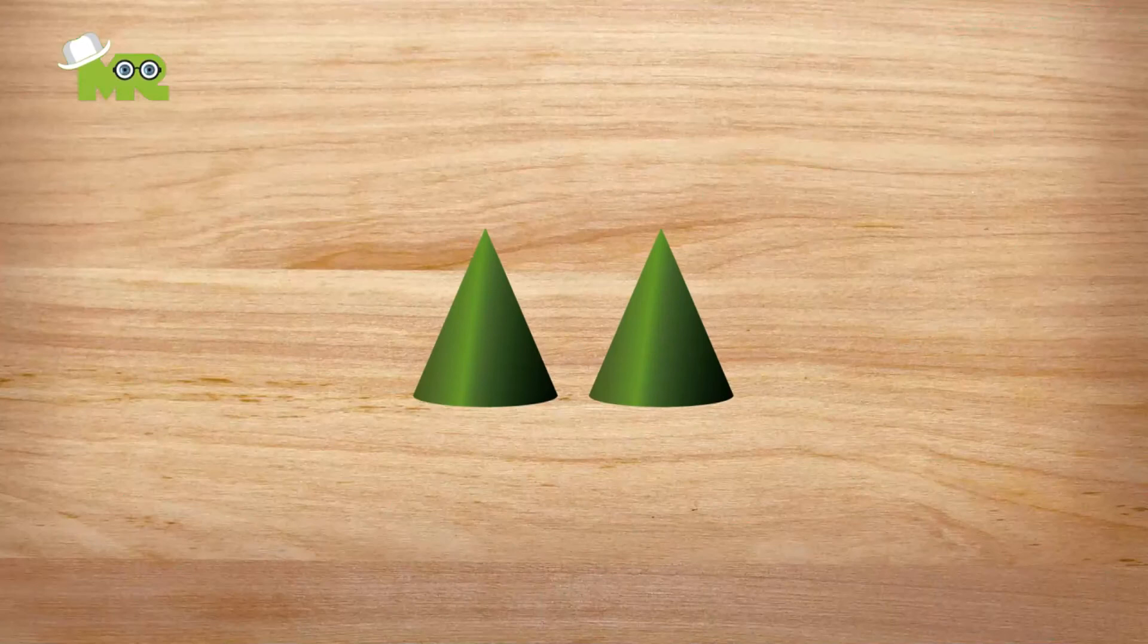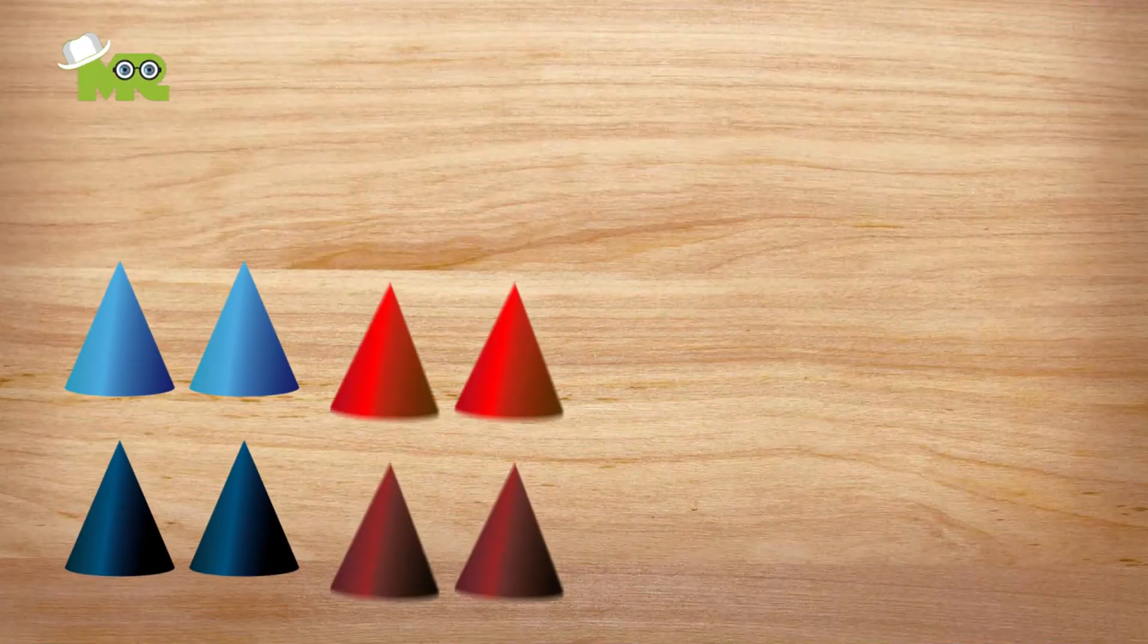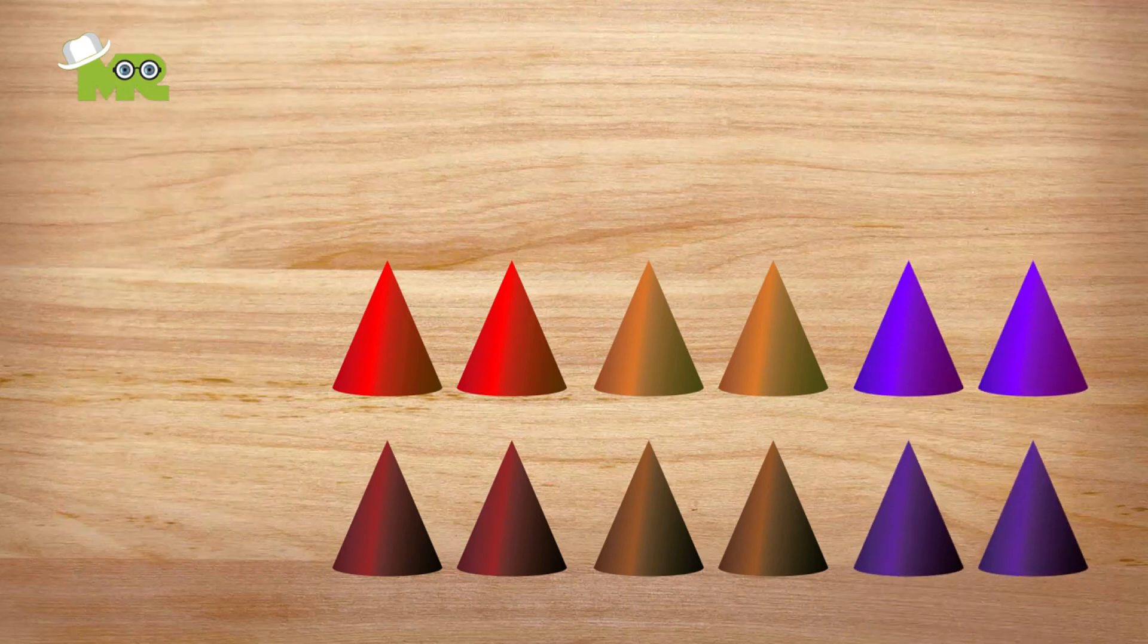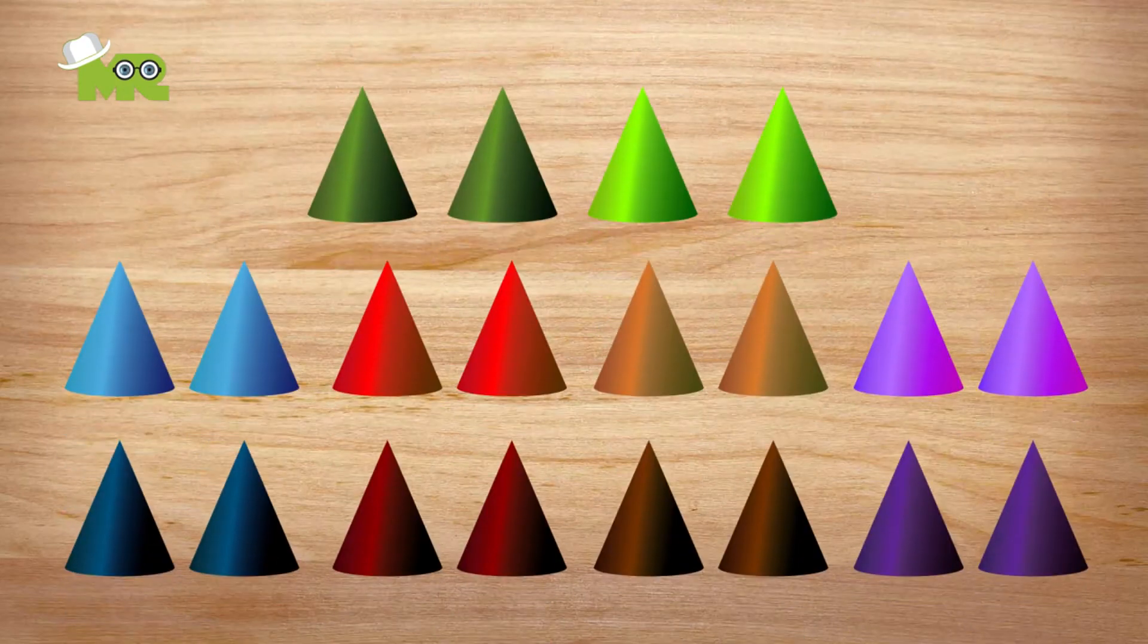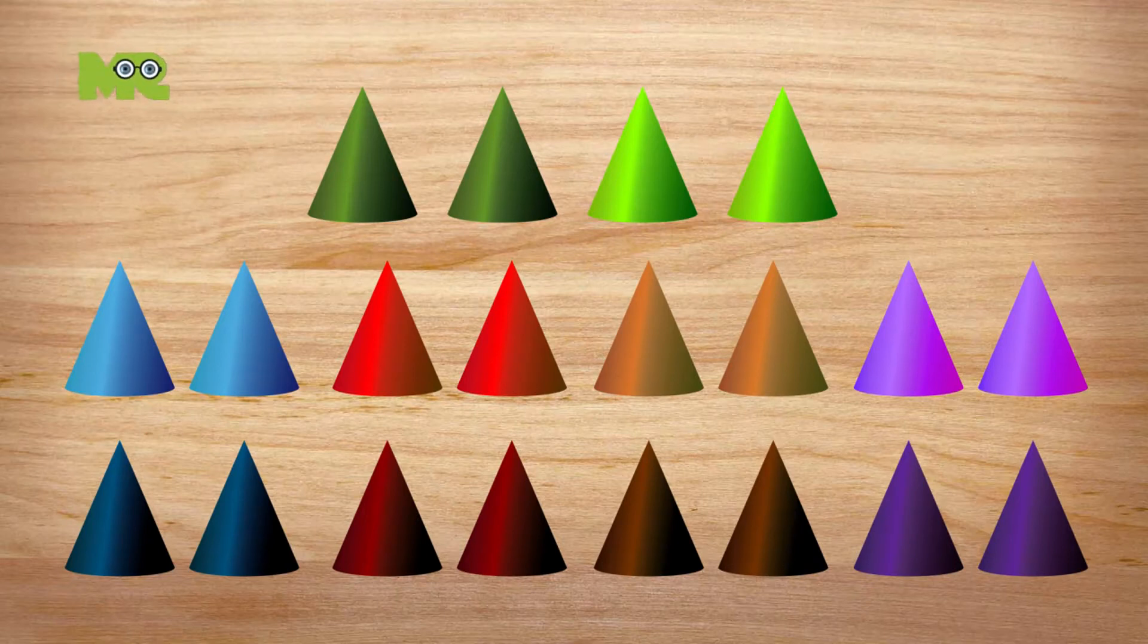So make two tokens dark green, and two tokens lighter green. Now repeat this process for blue, red, brown, and the purple team tokens. So finally, we have all five teams' tokens ready to play.